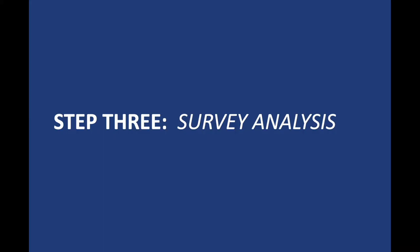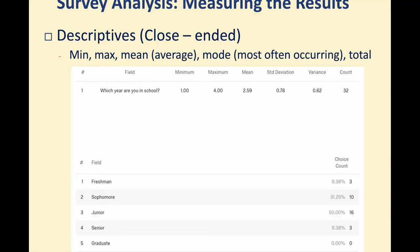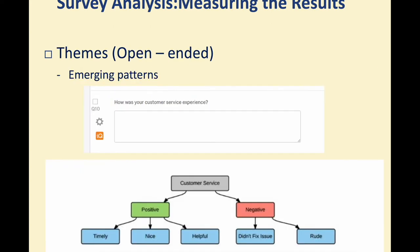Step three: it's time to analyze our data. We have descriptive statistics — min, max, average, mode, and totals — as one way to measure and order results. We can also theme results using patterns: for customer service data, did respondents say the experience was negative or positive? Then we can break down questions further in an org-chart-like fashion.